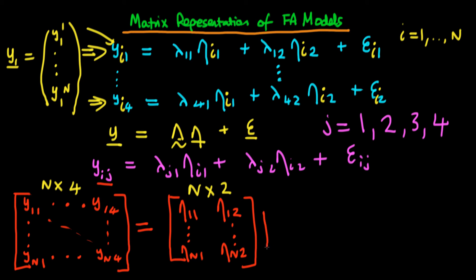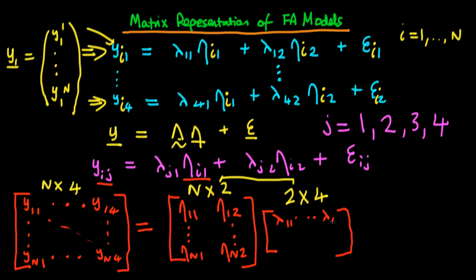We then multiply by a matrix of the specific factor weights. Because we have two unobserved factors and four observed characteristics, this matrix has dimensions 2 by 4. When I multiply an n by 2 matrix by this, I get an n by 4 matrix — the same dimension as the dependent variable, which makes sense. Each row represents the weights for the four observed characteristics from each factor. The first row has lambda_11 through lambda_41, and the second row has lambda_12 through lambda_42.